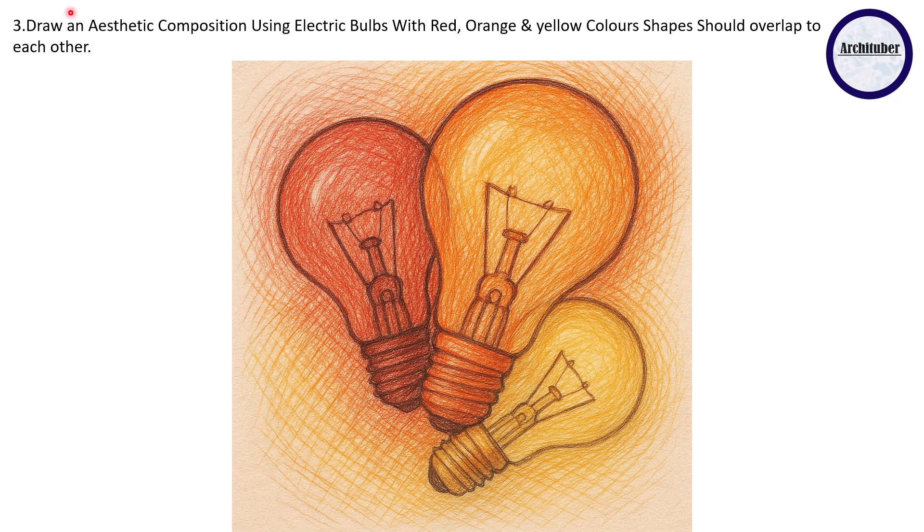If you know the question, you can just search on ChatGPT or any Copilot and try to make compositions and practice it. It will help you in your examination. Then the third question: draw an aesthetic composition using electric bulbs with red, orange, yellow colors. Shapes should overlap to each other. Now the bulbs are made up of glass, right? So glass is translucent or transparent so you can see through the glass.